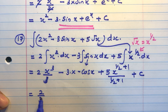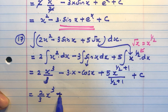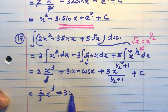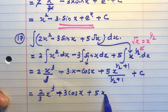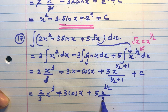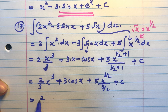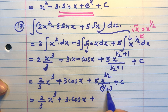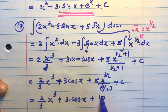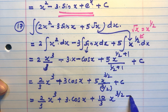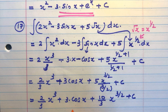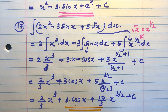That is equal to 2 by 3 into x raised to 3 plus 3cosx plus 5 into x raised to 3 by 2 divided by 3 by 2 plus c. Taking the reciprocal of 3 by 2, the answer is 2 by 3 x raised to 3 plus 3cosx plus 10 by 3 x raised to 3 by 2 plus c.